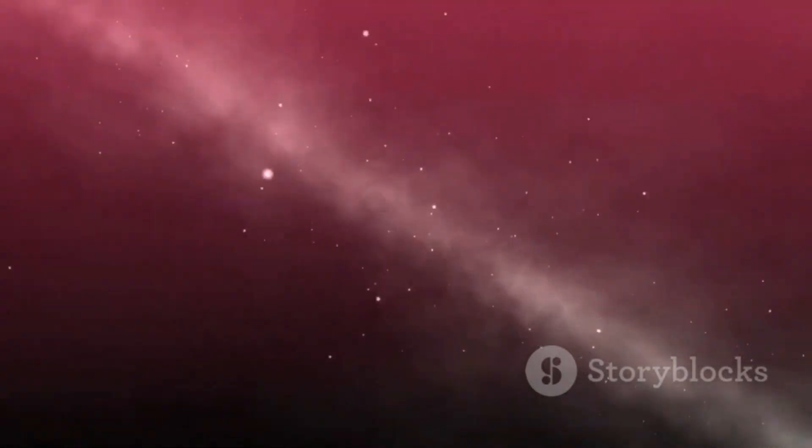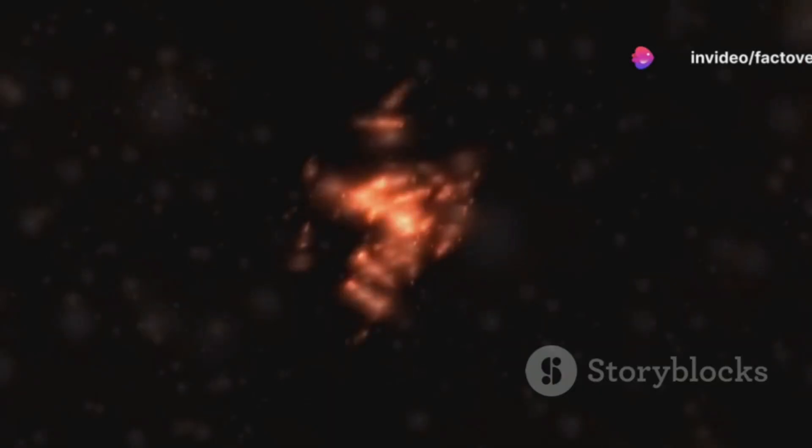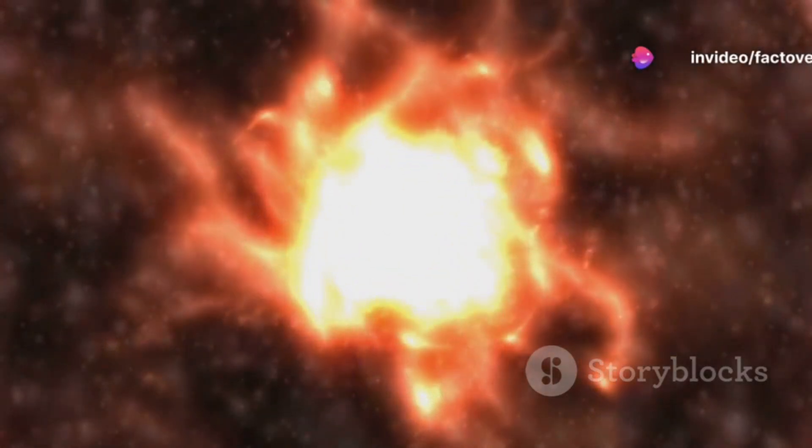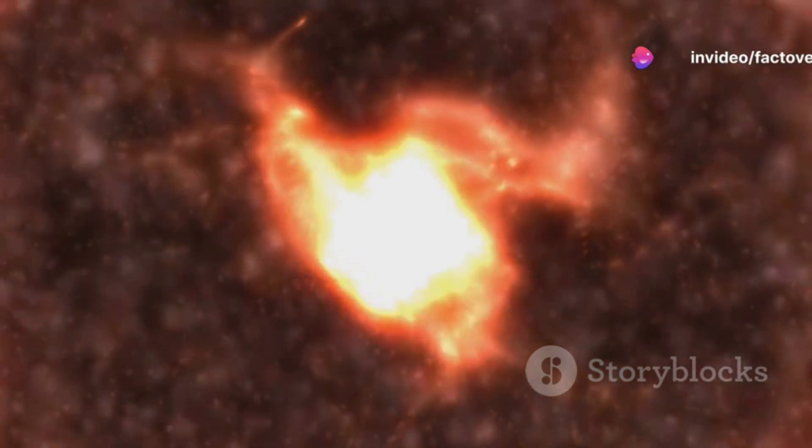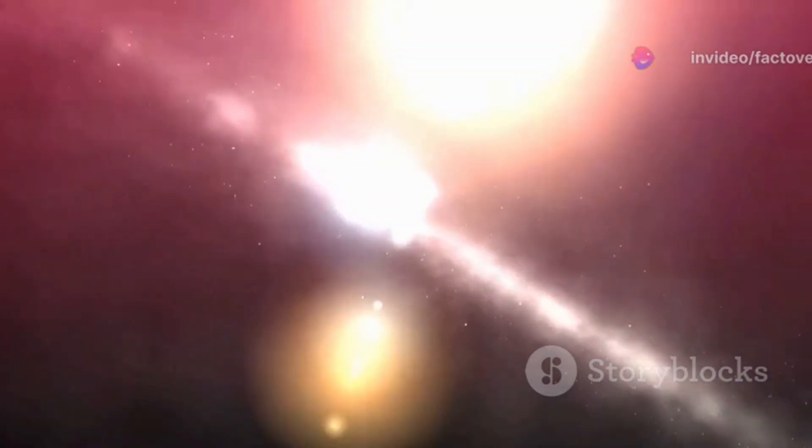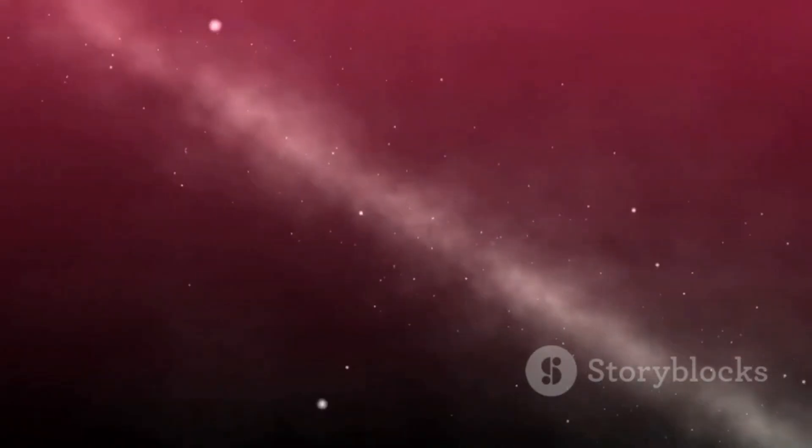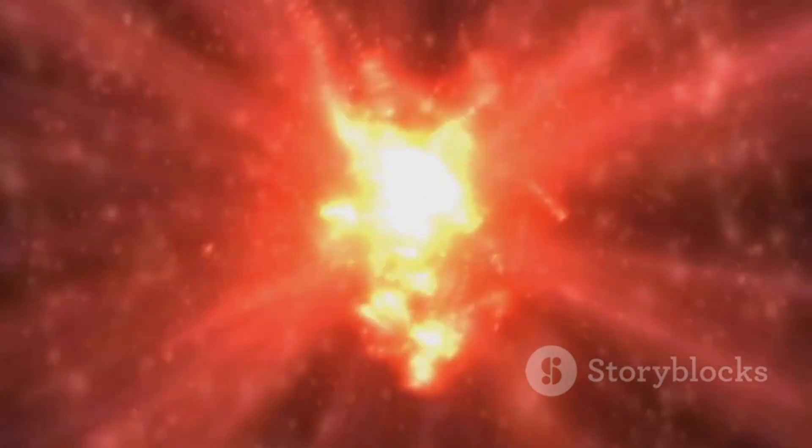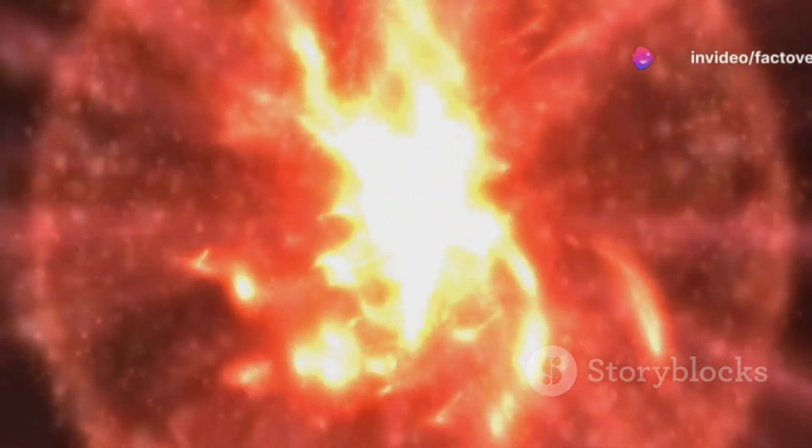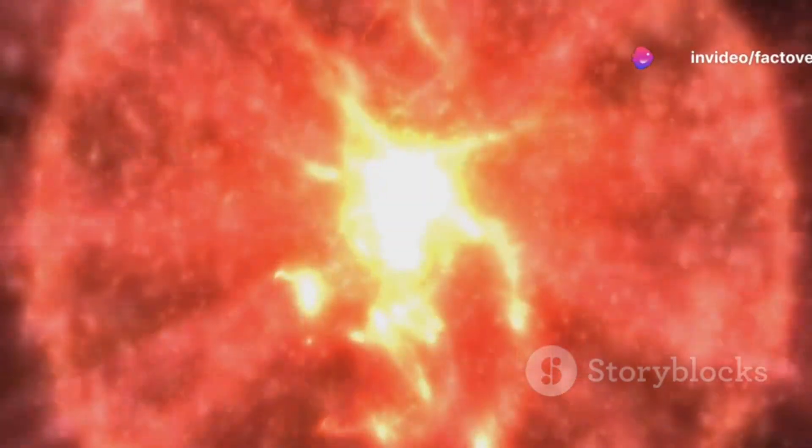The birth of a GRB is a violent and chaotic affair. It begins with a star much more massive than our sun, at least 20 times heavier, reaching the end of its life. Having exhausted its nuclear fuel, the core of the star collapses under its own immense gravity. This collapse triggers a shockwave that races outward, tearing the star apart in a supernova explosion.